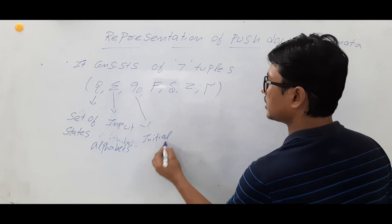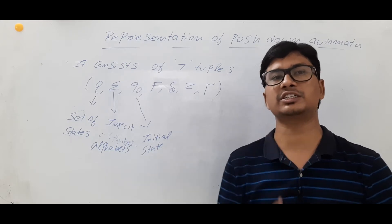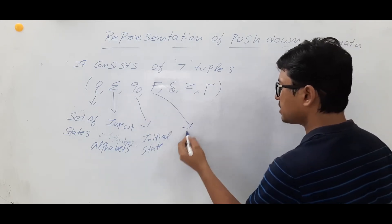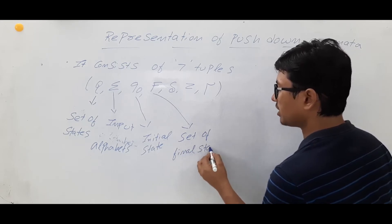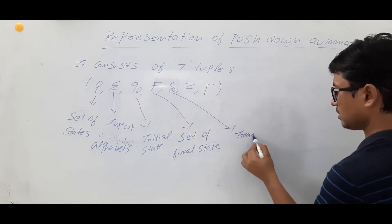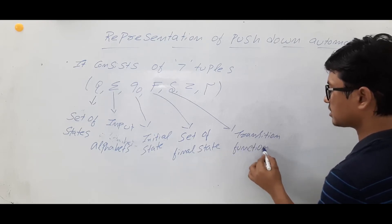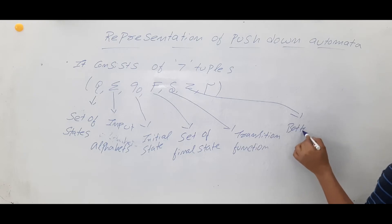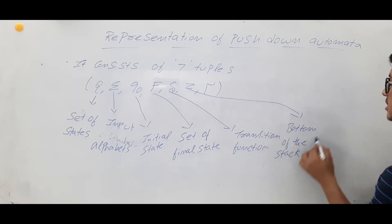Q-naught is the initial state. Just like in finite automata, we have only one initial state, and even in the pushdown automata we will have only a single initial state. F is the set of final states, meaning you can have more than one final state. And Delta is the transition function.